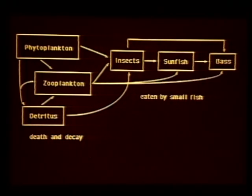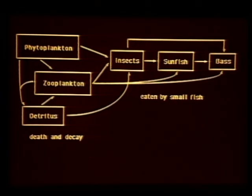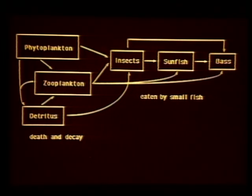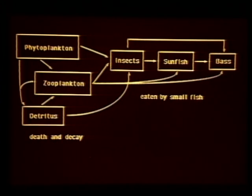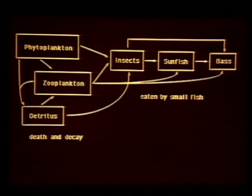Planktonic organisms form the base of the food chain or food web in ponds. For example, in a typical bass pond, plankton are interrelated in the food web. As shown in this diagram, phytoplankton are consumed by zooplankton. Zooplankton in turn are consumed by insects and juvenile sunfish and bass. Insects are consumed by sunfish and bass, and sunfish and small bass are eaten by large bass. All dead organisms including phytoplankton and zooplankton form detritus, an organic material as they decay. Detritus contains many nutrients such as minerals which are recycled back into the food web by zooplankton and insects which feed upon it.